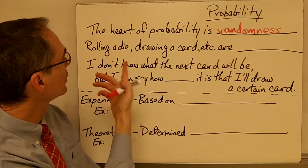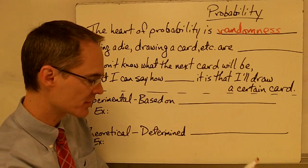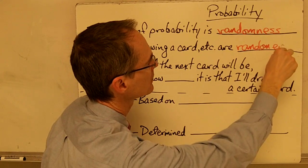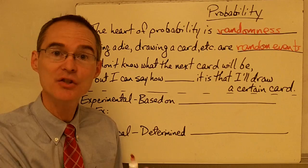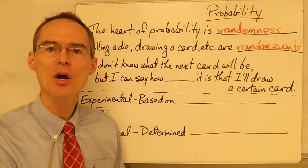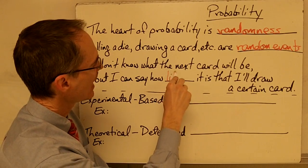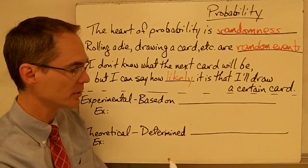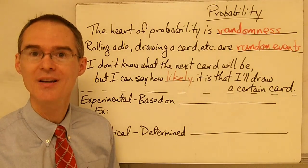Things like rolling a die, drawing a card from a deck of cards, or spinning a game board spinner are all examples of what we call random events. They are called random events because I don't know the outcome of any individual event. For example, if I draw a card from a deck of cards, I can't say what that specific card is going to be. However, I can say how likely it is that I will draw a certain card — for example, an ace or a face card. That's probability.